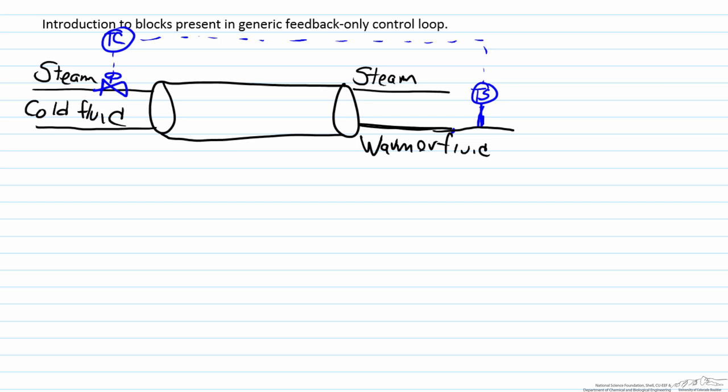In this case the controlled variable of interest is the temperature of the fluid exiting the heat exchanger, and we are trying to control that by manipulating the flow rate of steam.